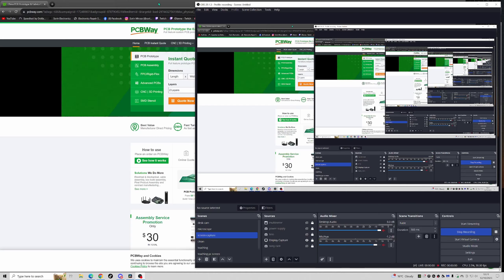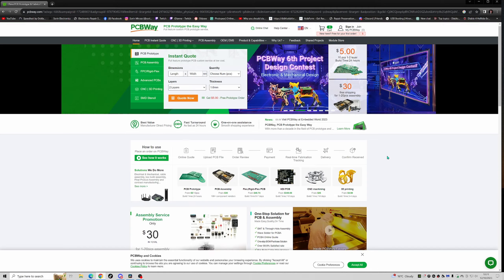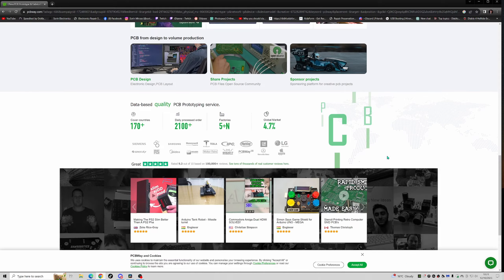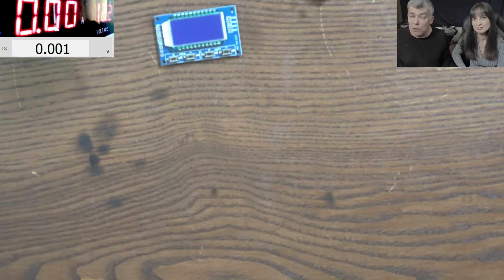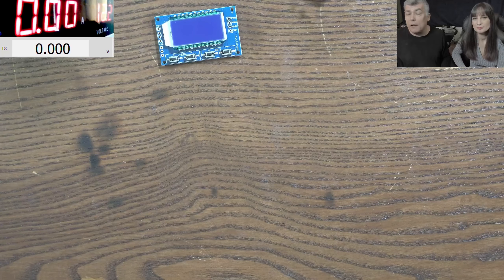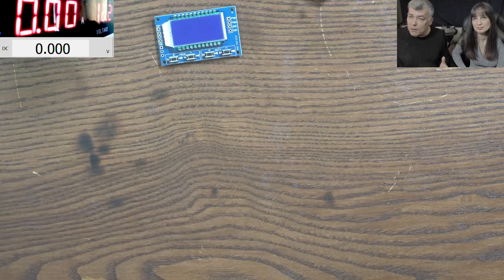PCBWay is your one-stop solution based on the fact they have all kinds of PCBs, 3D printing, CNC, sheet metal, all available on their website. You'll find the link in the description. Also, every new register will have five dollars to spend for PCB boards.